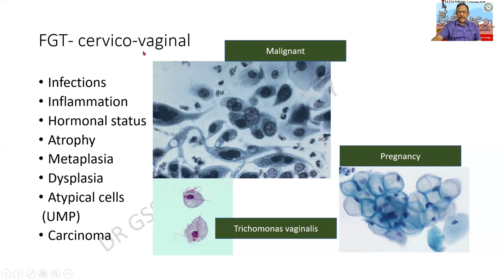So look at the various conditions which can be diagnosed. I repeat once again: infections — non-specific or specific, such as Trichomonas vaginalis or Candida albicans. Hormonal status — oestrogen phase, progesterone phase, or pregnancy where we can see navicular cells. Atrophy when the lady is old. And any epithelium — we can see metaplasia, dysplasia, and atypical cells. Initially it is unsignificant malignant potential, but later on it can become a frank carcinoma.